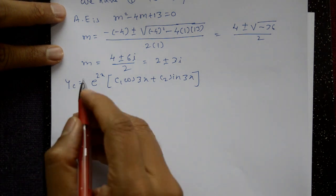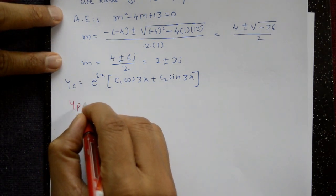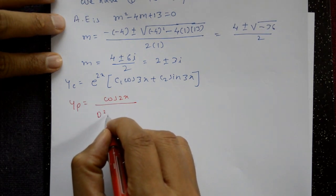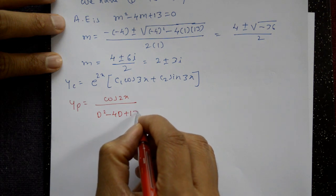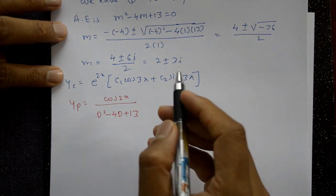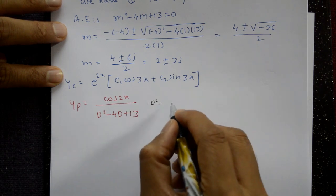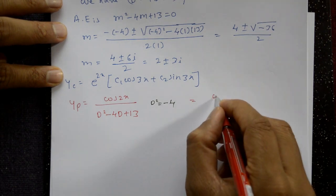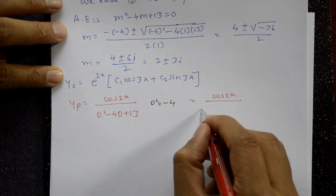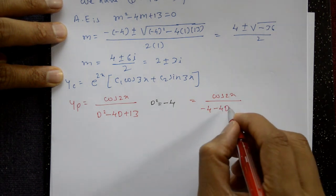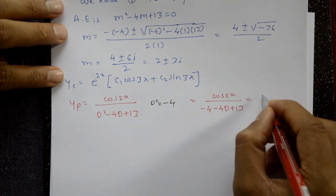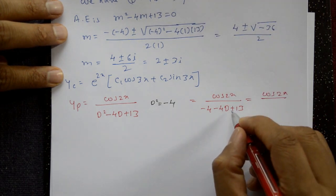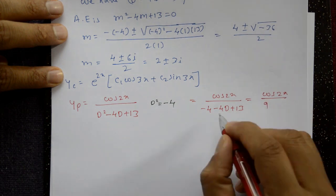Now find the particular integral. yp = cos 2x / f(D) = cos 2x / (D² - 4D + 13). Since D² = -a² and a = 2, D² = -4. So this becomes: yp = cos 2x / (-4 - 4D + 13) = cos 2x / (9 - 4D).